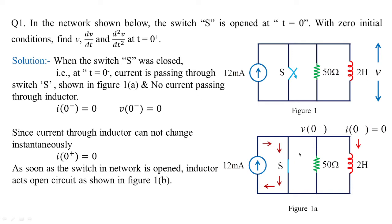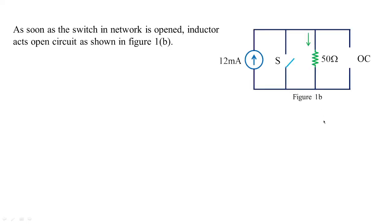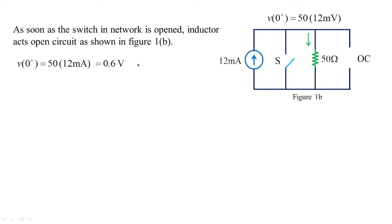As soon as the switch in the network is open, the inductor acts as an open circuit — this is the actual behavior of the inductor at the instant of switching. So if that is true, the circuit reduces to 12 milliamperes flowing through 50 ohms. We can easily find the voltage across 50 ohms: voltage equals 50 multiplied by 12 milliamperes, giving 0.6 volts. So unlike the current condition, the voltage condition has changed: v(0−)=0 whereas v(0+)=0.6 volts. This is an important factor to keep in mind while solving this network.